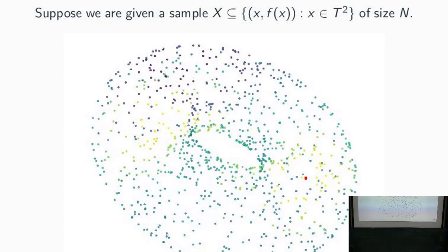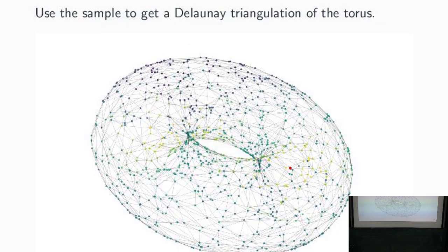I want this to be a model for something we might see in an applied setting, so I'll work not with the function itself but with data generated from it. We have some number of points sampled on the torus, and we use that function to associate a function value to each point — the color scale is the same as before. We turn this into a filtered simplicial complex by taking the Delaunay triangulation of the torus using those points; now we have values on each vertex which induce a filtration on this triangulation.